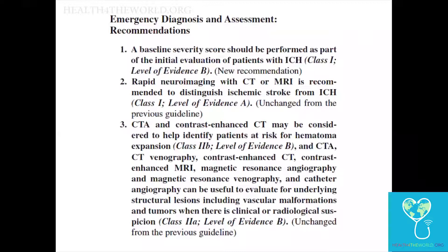Rapid neuroimaging is key, using CT or MRI to distinguish ischemic stroke from ICH. We really can't tell clinically whether a patient is having an ischemic stroke or an ICH until they get a CT scan. MRI can also be utilized, but CT scanning is usually more widely available and easier to perform in critically ill patients. The guidelines also recognize that CT angiography or MRI may be useful.